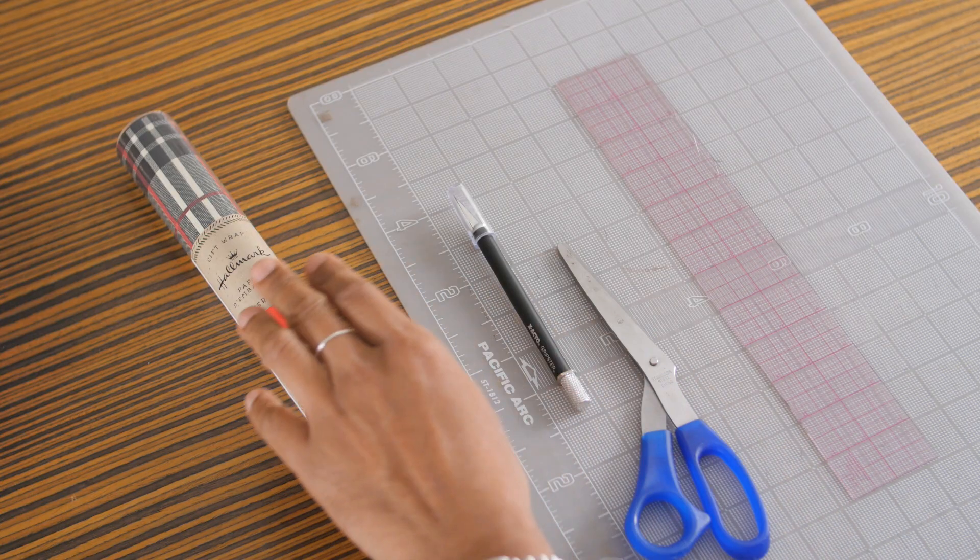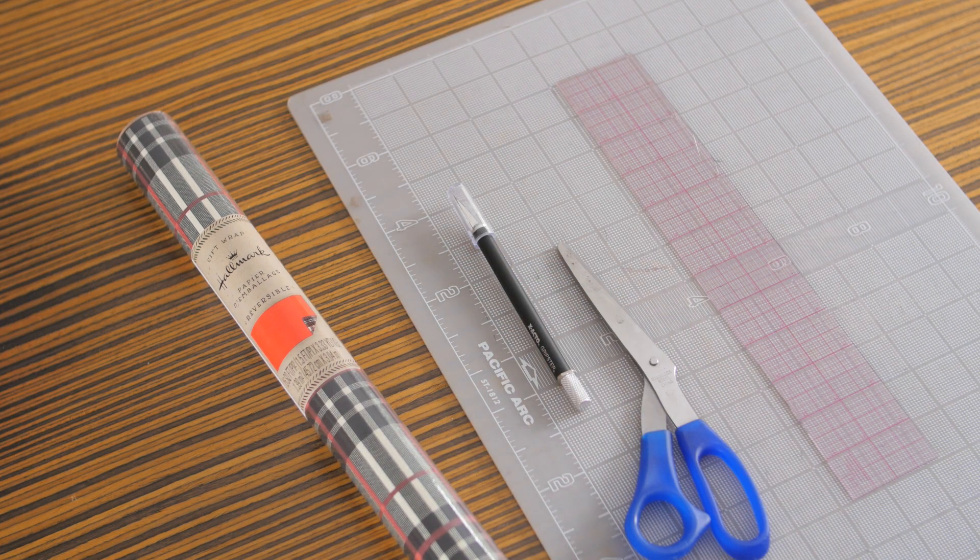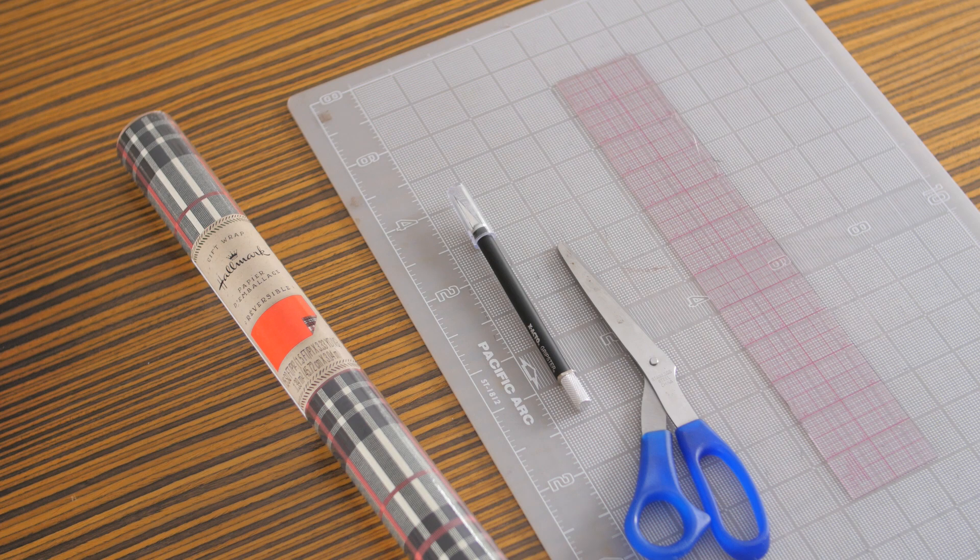You'll need a double-sided Hallmark Maker gift wrap, cutting knife, scissors, a ruler and a cutting board.